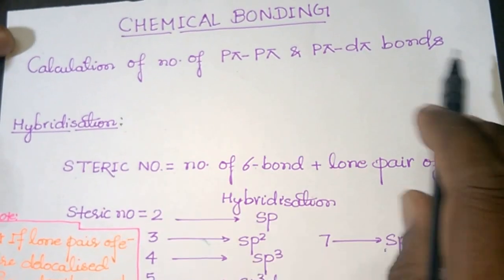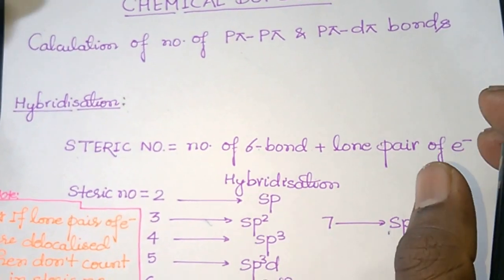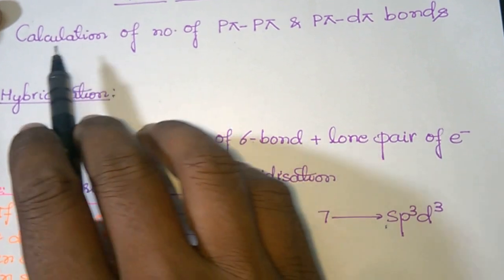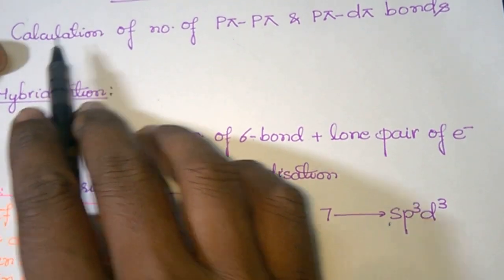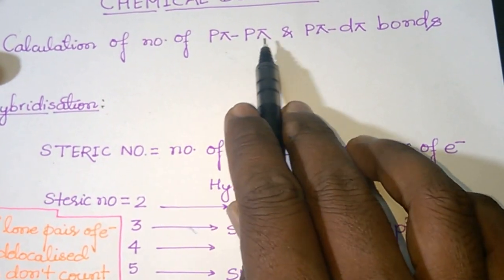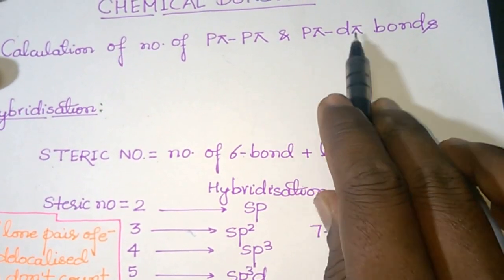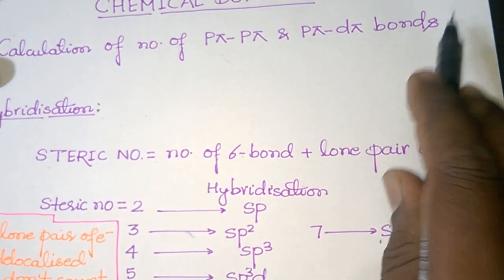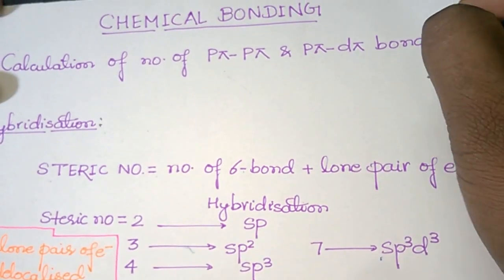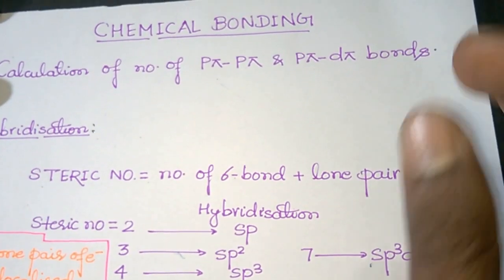Good evening dear students. This is my first lecture and the topic is calculation of the number of p pi-p pi and p pi-d pi bonds in a chemical compound.